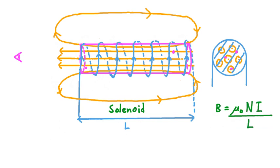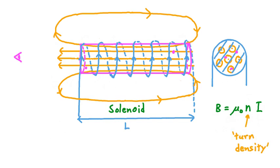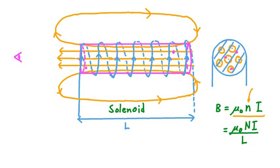Now, if we rearrange this equation a bit so it reads mu-naught times n times I over L, sometimes we'll see this equation written in an alternative form where capital N over L is replaced by a lowercase n. When the equation is written this way, we say it's written in terms of the turn density of the loops in the solenoid — in other words, how many loops or turns there are per unit length. The equation for magnetic field can be written either way, and each form means the same thing, but this form is more condensed in that it uses the turn density.